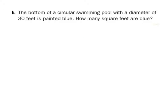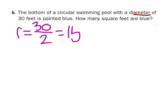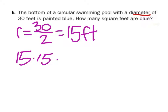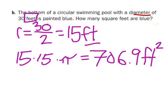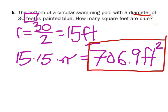This example gives us a diameter, which we don't want — we want the radius. Since the diameter is 30 feet, we divide by two, so the radius is 15 feet. Now we multiply: 15 feet times 15 feet times pi, which equals 706.9. Since this is area, it's two-dimensional — so the answer is 706.9 feet squared.